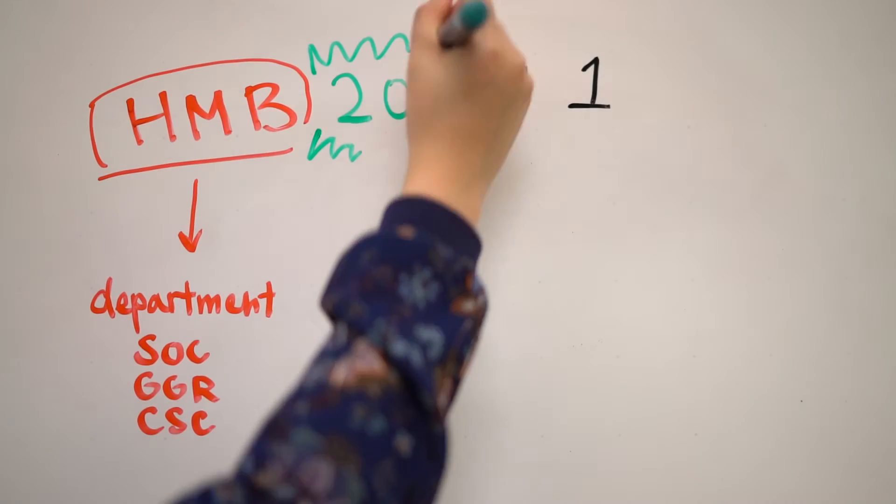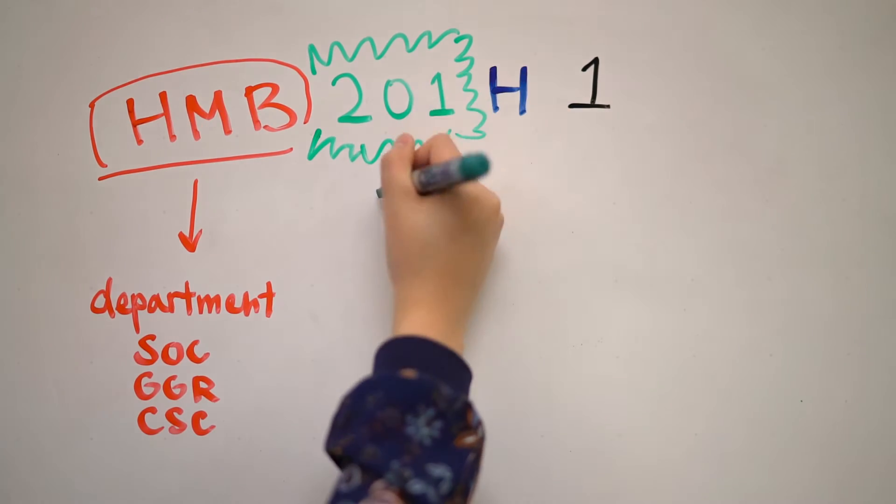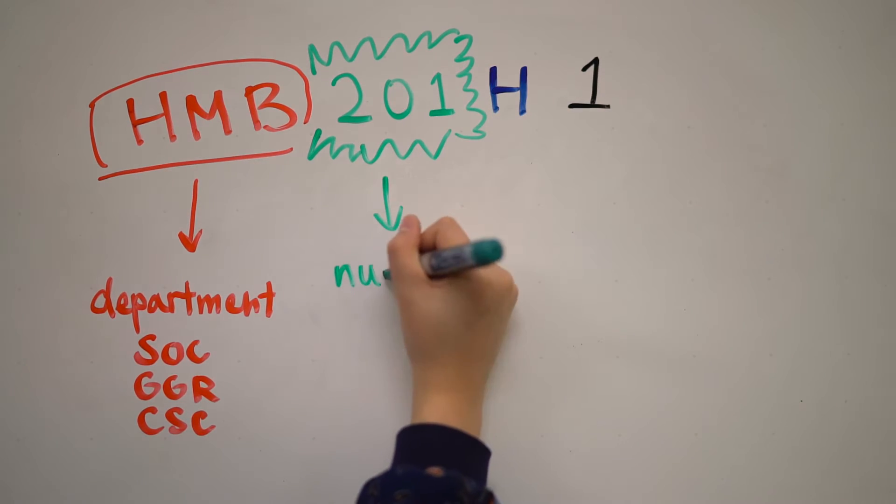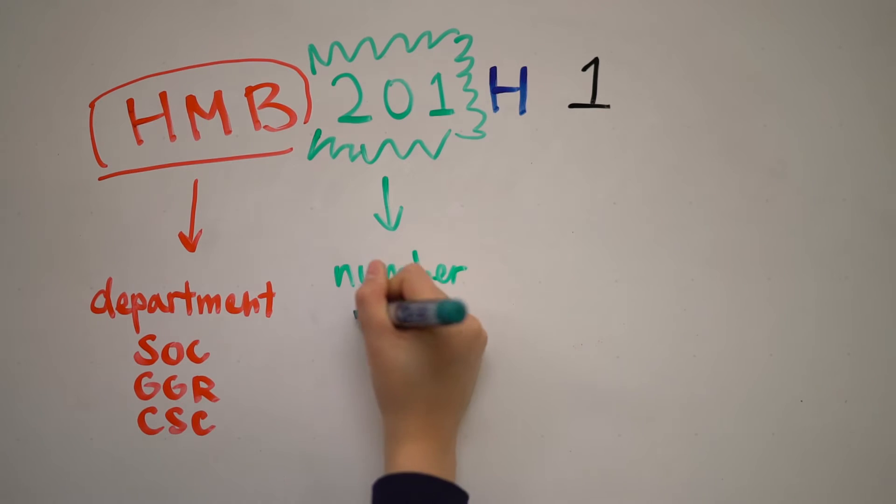The course number is a combination of three numbers where the first number indicates the credit level of the course, ranging from 100 level to 400 level. Generally, the course numbers coincide with the order in which the courses are taken.